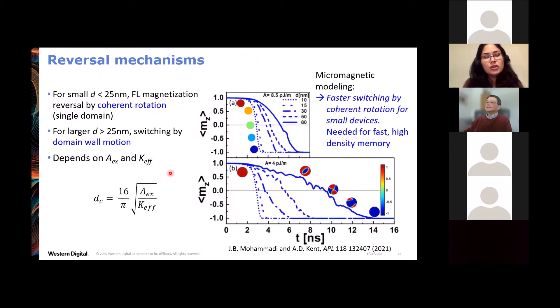And the reversal mechanism happens by either coherent rotation, so that's for a single domain for bit sizes, say less than 25 nanometers. For larger bit sizes, the switching happens by domain wall nucleation and propagation. And whether you have single domain or multi-domain depends on the exchange constant A and the effective anisotropy energy. This is micro magnetic modeling showing that you get faster switching by coherent rotation for the smallest devices here, compared to domain wall motion for larger devices that takes a longer time for switching, especially if you have a low value for the exchange constant compared to higher.